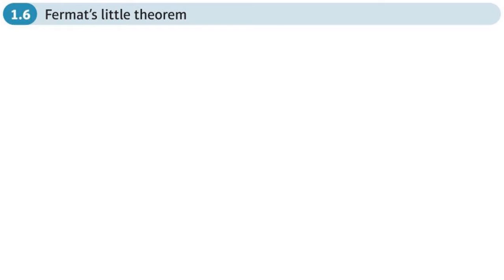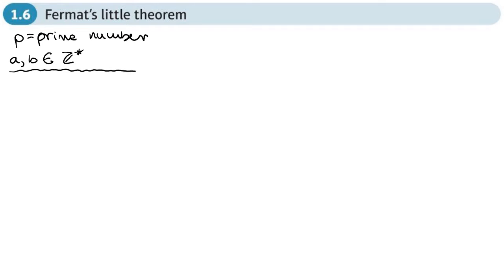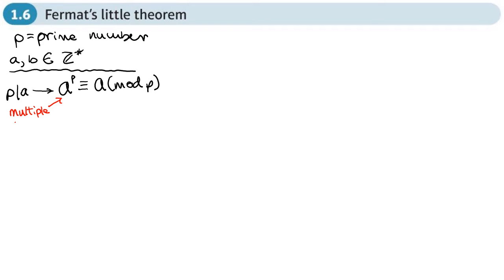This is the sixth section of the number theory chapter and we're going to be looking at Fermat's Little Theorem. Where I write P it represents a prime number, and where I write a or b it represents a positive integer. The first rule says: if a prime P divides an integer a, then a to the power of the prime is congruent to a under mod P. We can use this rule when a is a multiple of P.